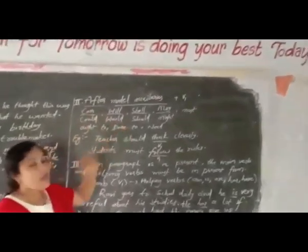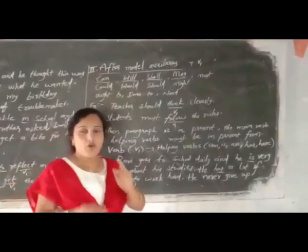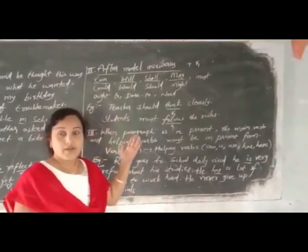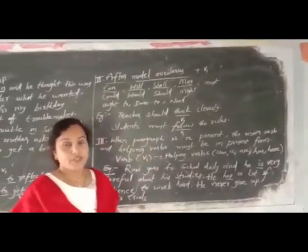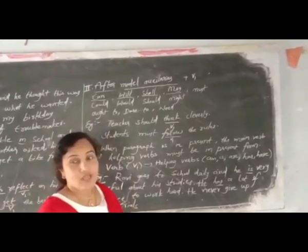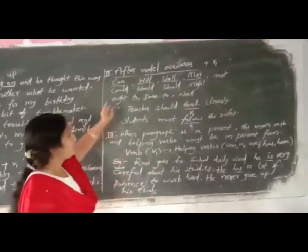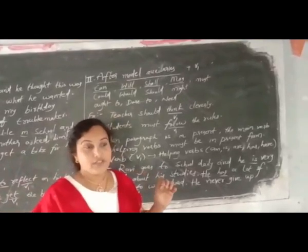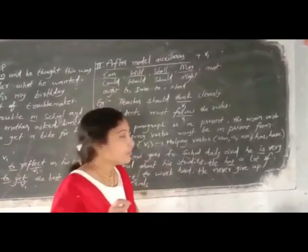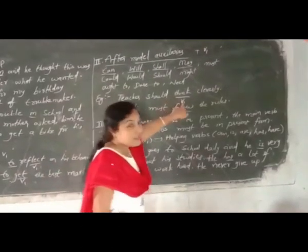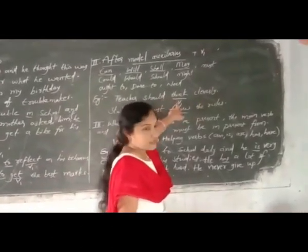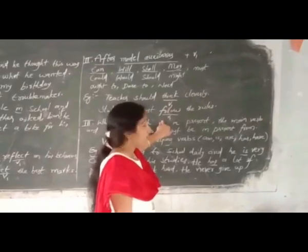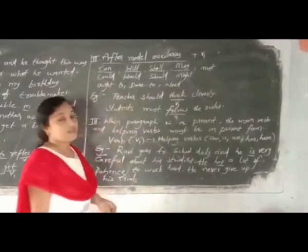Our second rule: after modal auxiliaries — can, could, will, would, shall, should, may, might, must, ought to, dare to, need — after all these modal auxiliaries, V1 should be used. For example: 'teachers should think cleverly' — think is V1. 'Students must follow' — follow is V1.